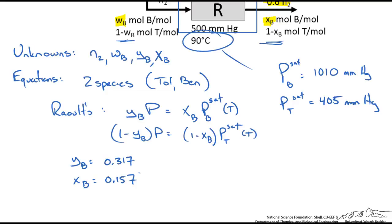I will carry my numbers through until the end before rounding them up. What we have done here is we have solved for two of our unknowns: YB and XB. So we should be able to write our two species balances and solve for N2 and WB.